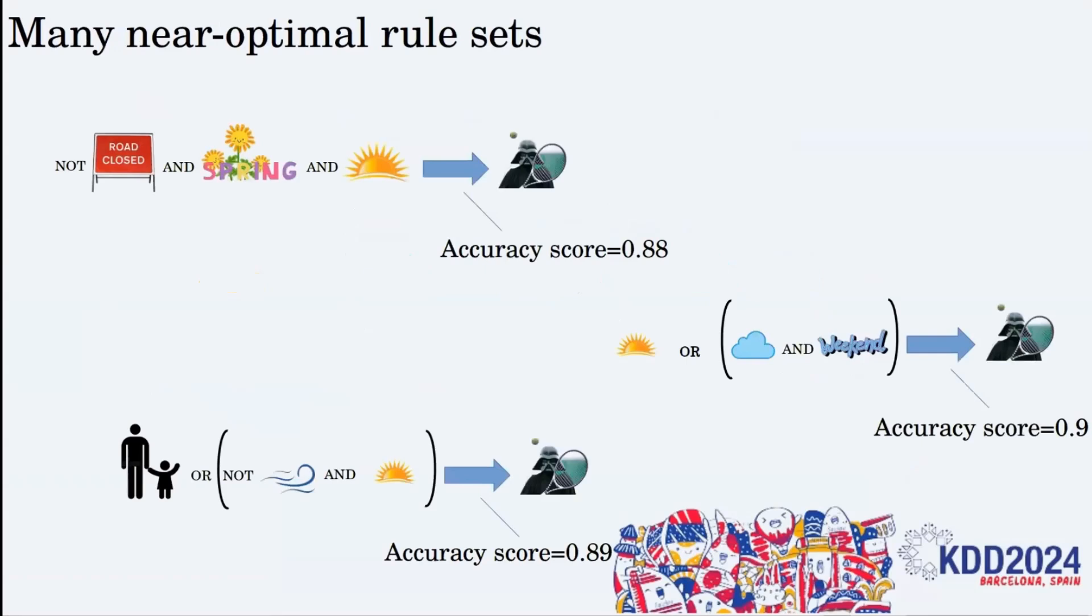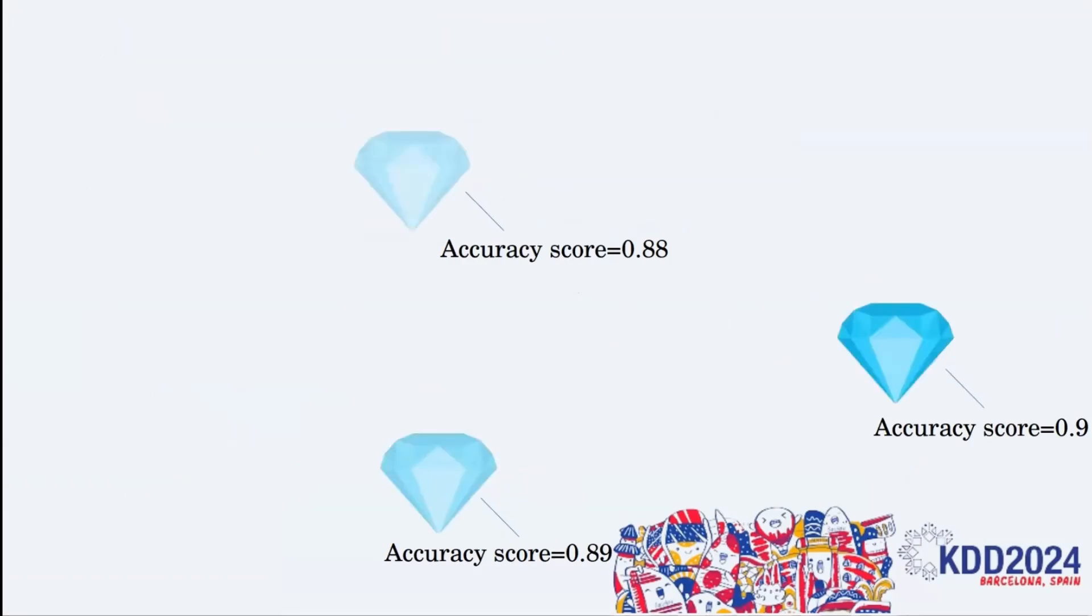However, a single rule-set only provides a partial representation of a predictive task. Often, there is a large set of diverse models exhibiting near-optimal predictive performance.